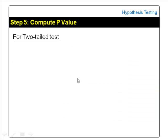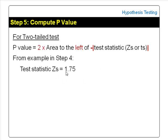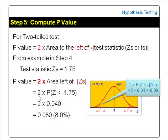For a two-tailed test, the p-value is 2 times the area to the left of the negative test statistic, zs or ts. The two vertical bars represent the absolute value of the test statistic, so it is always the area to the left of minus the test statistic. Using the same example from step 4, the test statistic zs is 1.75. The p-value is 2 times the area to the left of minus 1.75, written as 2 times the probability of z less than minus 1.75. This equals 2 times 0.04, which is 0.08 or 8%.